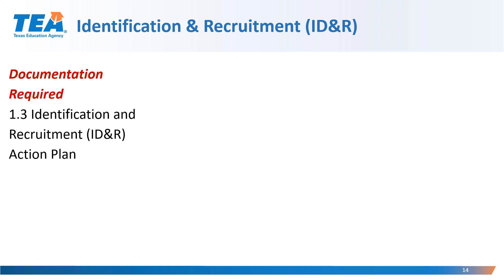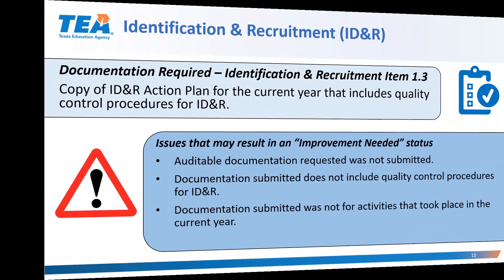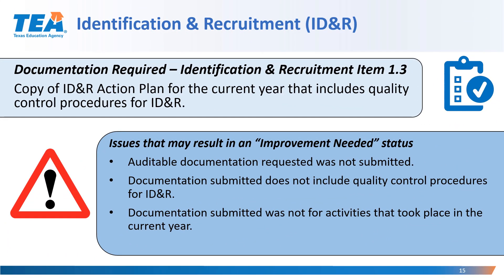Requirement 1.3 Identification and Recruitment IDNR Action Plan. The acceptable documentation for this requirement is a copy of the IDNR Action Plan for the current year that includes quality control procedures for IDNR. Issues that may result in an improvement need status are the following: applicable documentation requested was not submitted; documentation submitted does not include quality control procedures for IDNR; or documentation submitted was not for activities that took place in the current year.